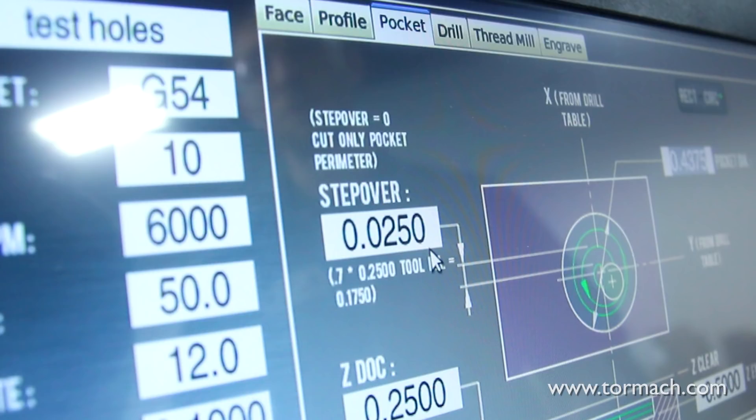The last thing I'd like to show you guys today is another way of using the pocketing routine. If we look in here again we can see there's a little note. It says step over equals zero, cut only pocket perimeter. That's giving us the ability to take a single pass around the outside of the part.